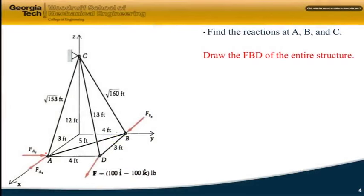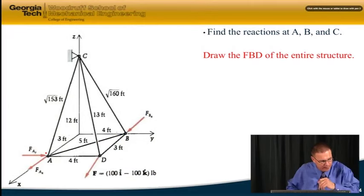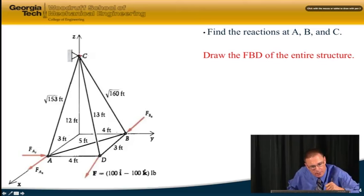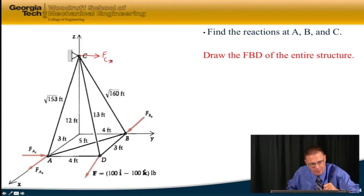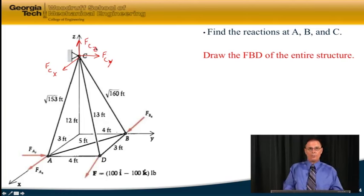So let's go ahead and draw those on my free-body diagram. I'm going to have F_CX, this is Y, F_CY, F_CX, and F_CZ. And so now I have a good free-body diagram.